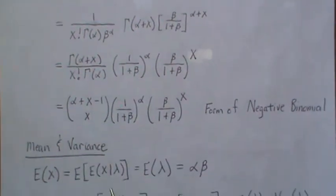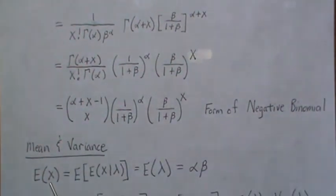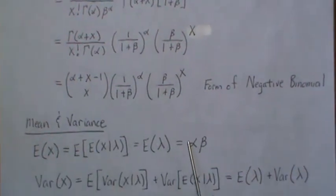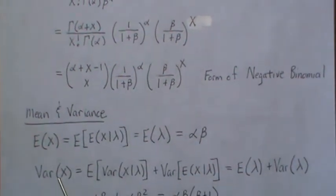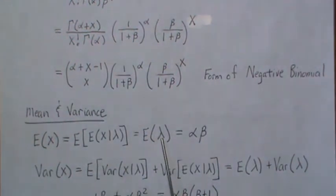So let's find the mean and the variance of this. The mean of X is the expected value of this conditional, but this is Poisson so the mean is lambda. The expected value of lambda is alpha beta because this is a gamma distribution.